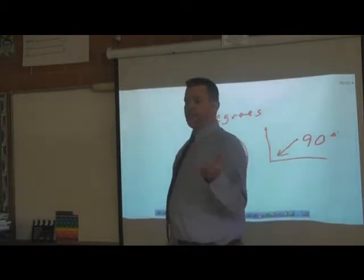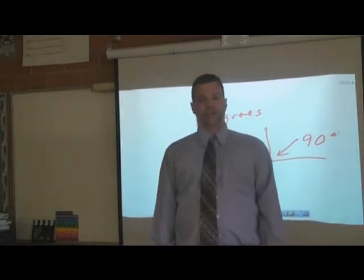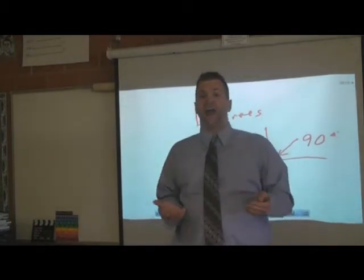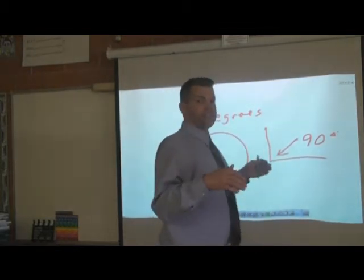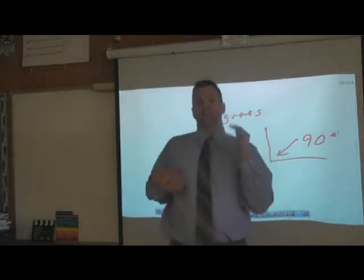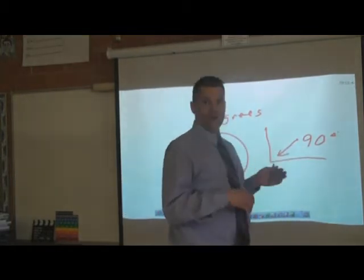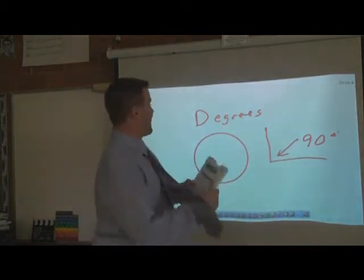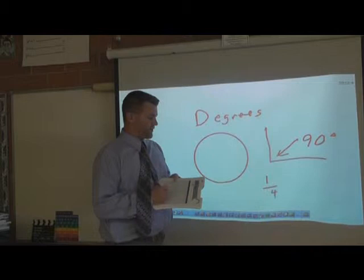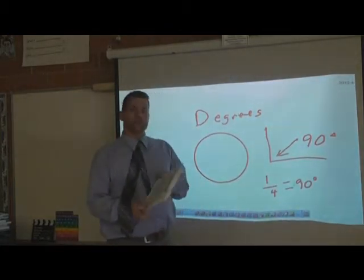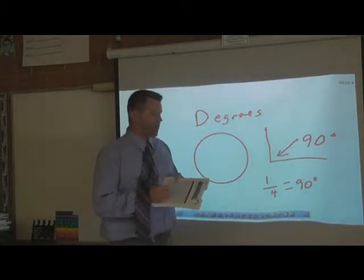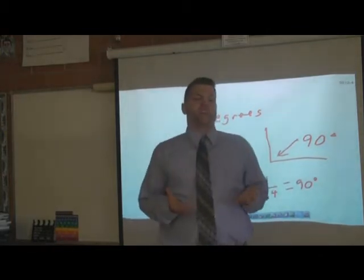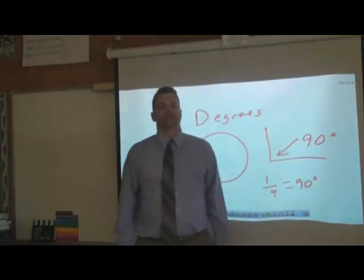All it takes is one more 90 degree turn, and then I've done one complete turn. When you're looking at a circle and turning completely around, you can look at it in terms of fractions or degrees. One fourth of a turn is equal to 90 degrees. It takes four one-fourth turns — one fourth, one fourth, one fourth, one fourth — to equal one complete turn, a four-fourths turn, or one whole turn.